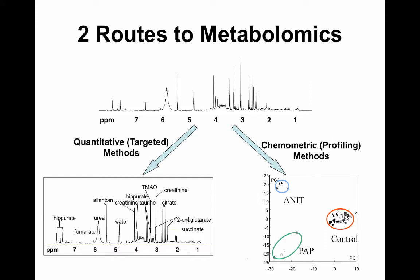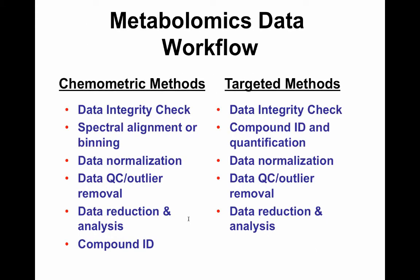We talked about two different routes to metabolomics: the chemometric, untargeted profiling methods where identification isn't a major focus, and the quantitative or targeted approach where feature identification and quantitation is essential. In the traditional chemometric method, there's a lot of data integrity checking, and spectral alignment or binning — which you did in XCMS — becomes very important. In the targeted method, the first step after data integrity check is compound identification and quantification, which is what you did in Bazel and GC-Autofit.